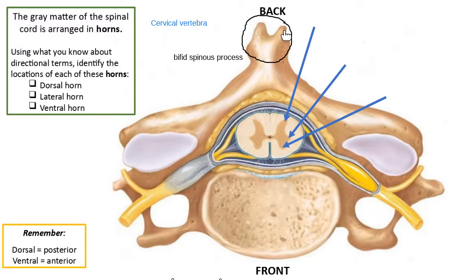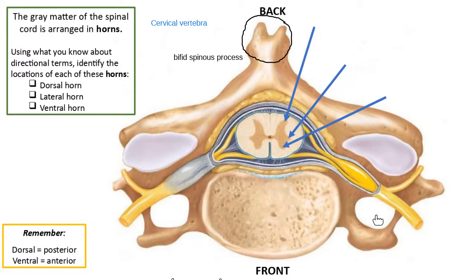The other things that identify this as a cervical vertebra are two holes here, one on each side. The bone marking word for a hole is foramen — remember in the bottom of the skull we had the foramen magnum. These two structures seen here are called transverse foramen.